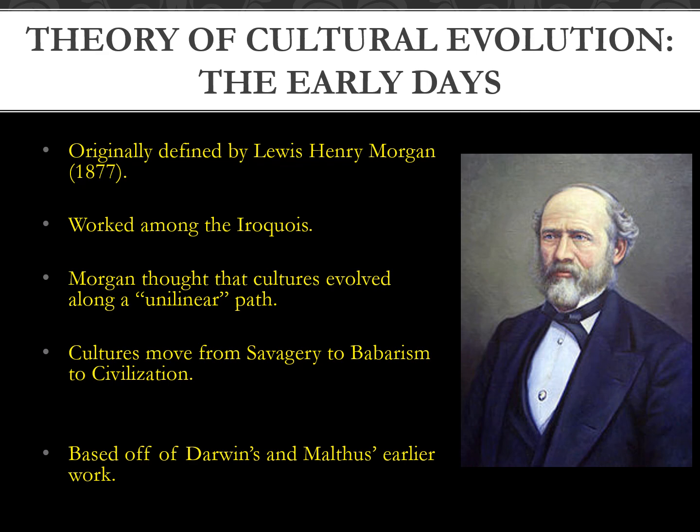The early progenitor of cultural evolutionary theory was Lewis Henry Morgan in 1877, who developed this notion while working amongst the Iroquois people. Morgan thought cultures evolved along a unilinear path following a single trajectory moving from savagery to barbarism to civilization, based on Charles Darwin's work as well as Thomas Malthus's work on demography.